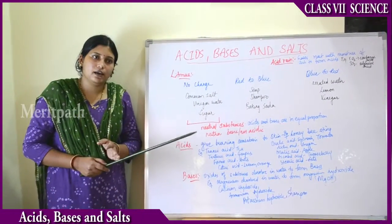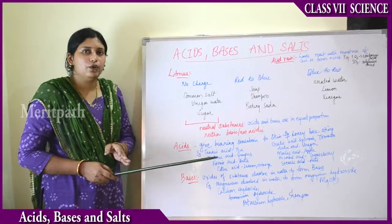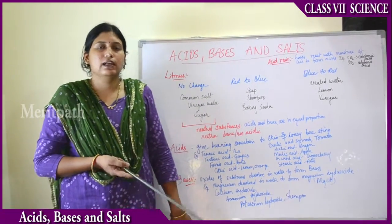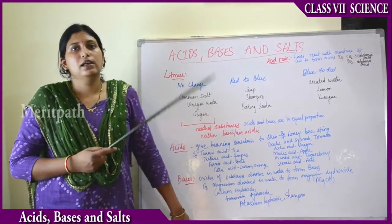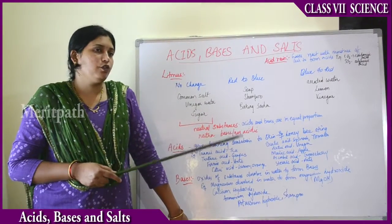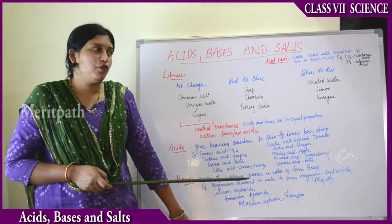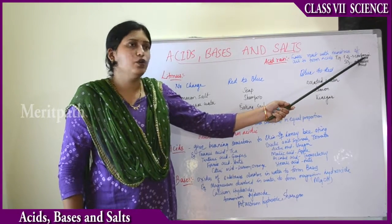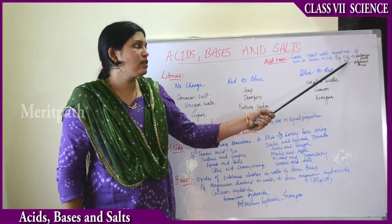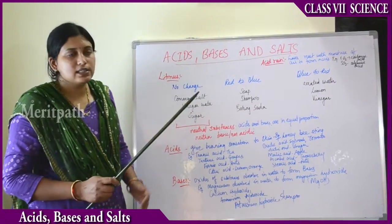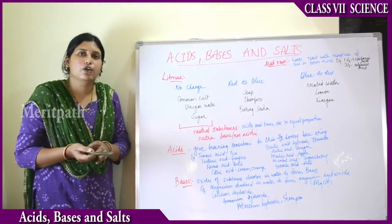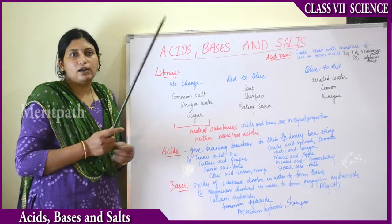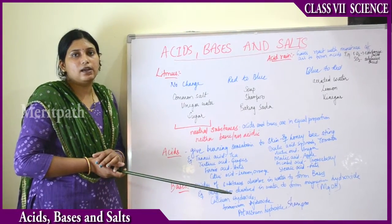Gases such as carbon dioxide, sulfur dioxide, and nitrogen dioxide react with moisture in the air and convert into acidic forms. Carbon dioxide reacts with moisture to form carbonic acid; sulfur dioxide reacts to form sulfuric acid; nitrogen dioxide reacts to form nitric acid. These acids mix with rainwater to form acid rain.